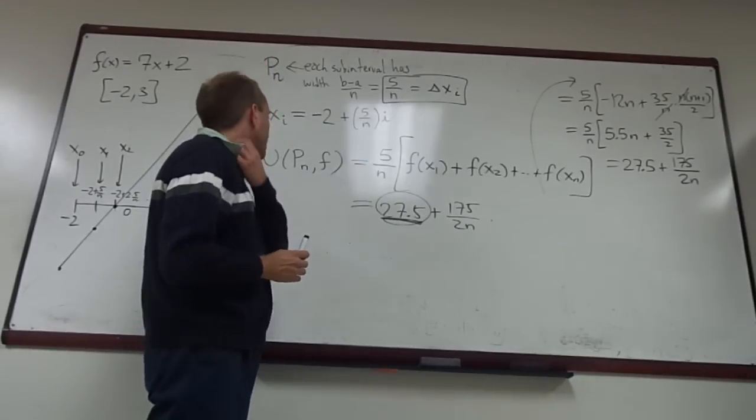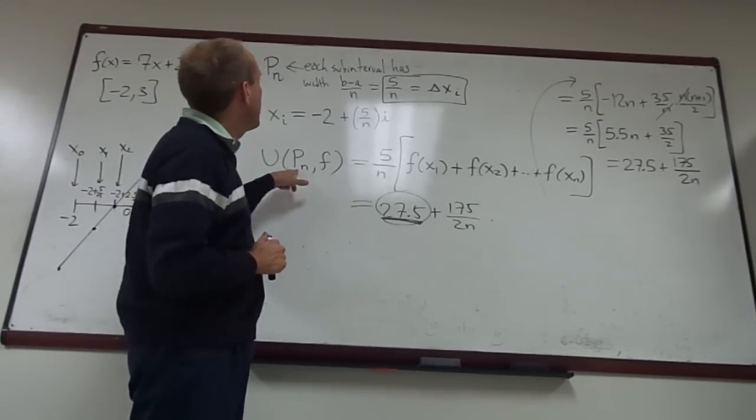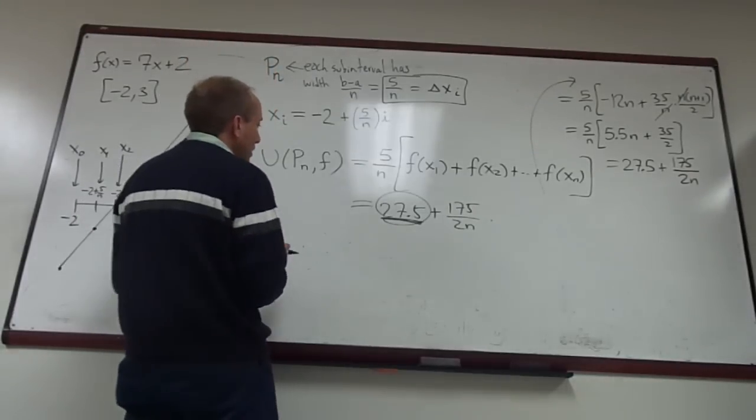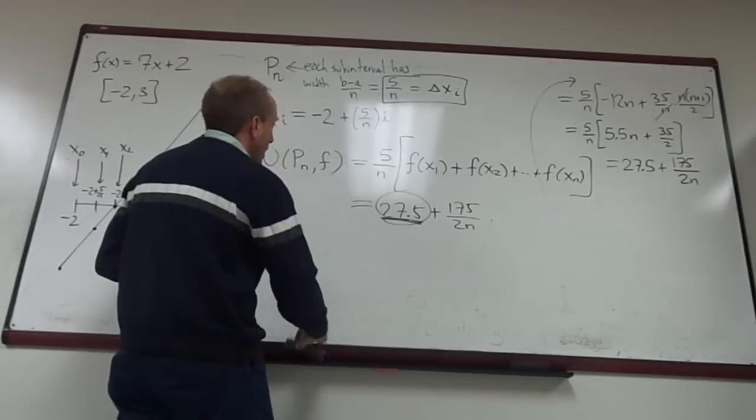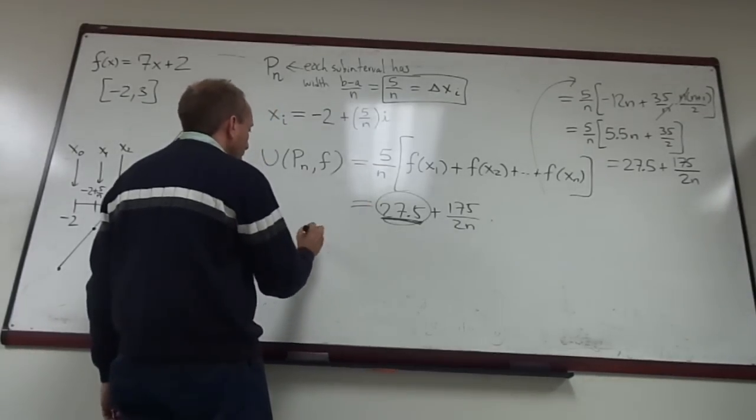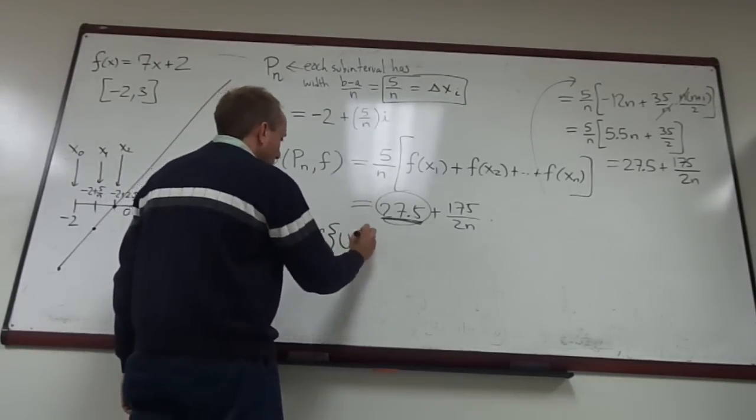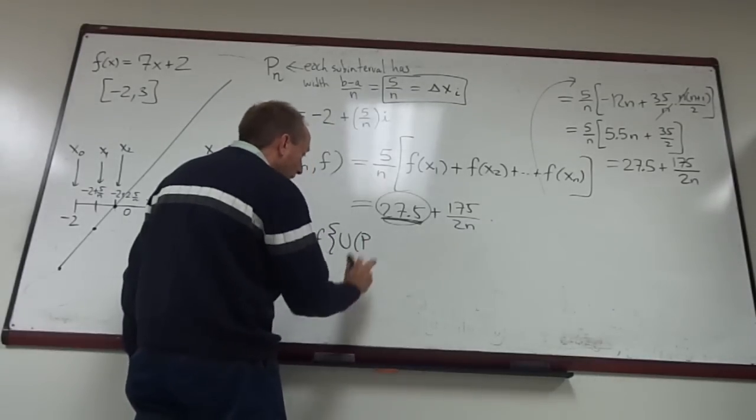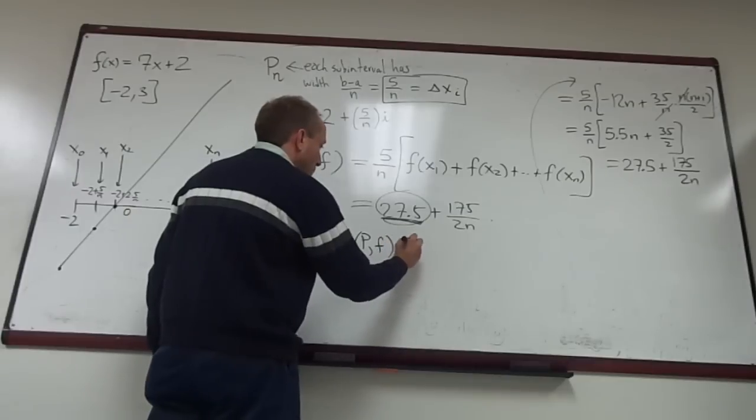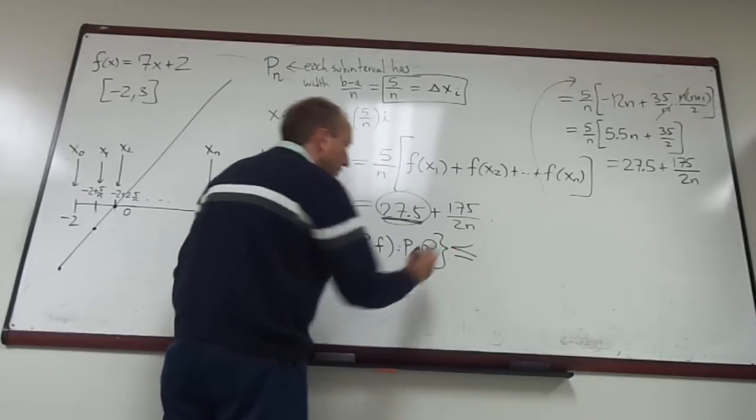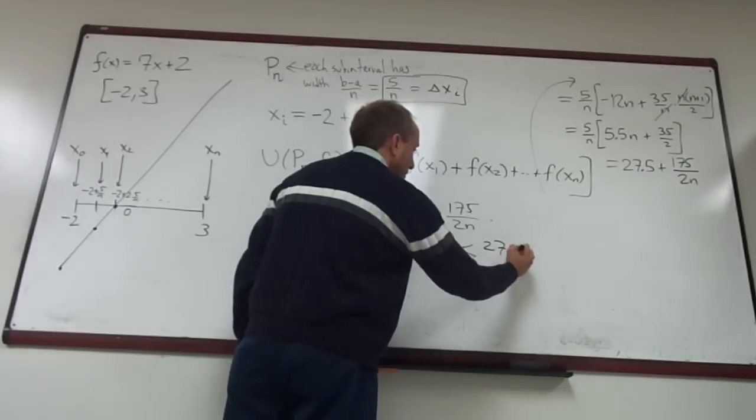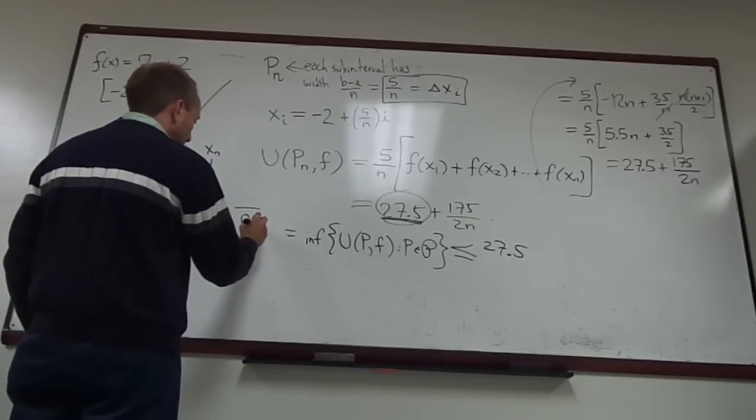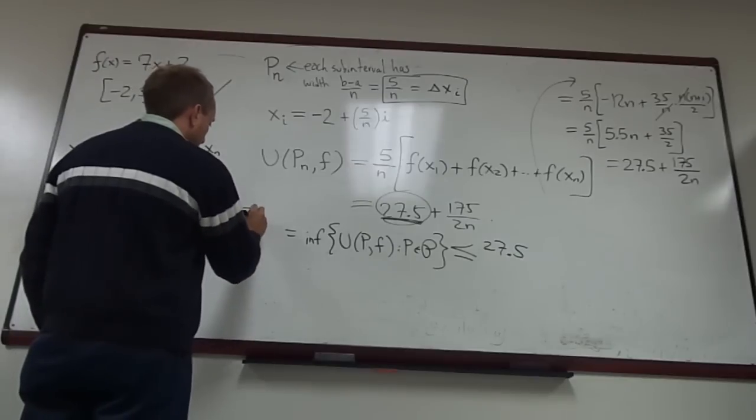However, we do need to be a little bit careful because this is not every partition. This is only a very special kind of partition where all of the subintervals have an equal length. So what I really need to point out is that the infimum of all of the U P F's, not just the P sub N of F's, where P is a partition, has to be less than or equal to all of these numbers. So in particular, it has to be less than or equal to 27.5. And this then becomes your upper Riemann integral of F from A to B.